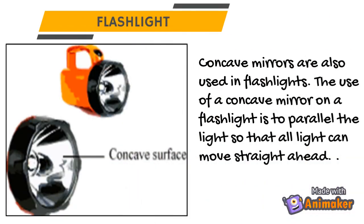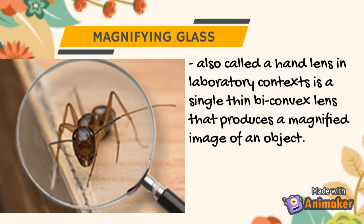Next are flashlights. Concave mirrors are used in flashlights to parallelize the light so that all light can move straight ahead. If you open the front cover of the flashlight and remove the concave mirror, the resulting light will widen in all directions and cannot illuminate objects at a distance. Next is the magnifying glass, also called a hand lens in laboratory context. It uses a single thin convex lens that produces a magnified image of an object — specifically a virtual, magnified, and upright image where all light rays converge to a single point.